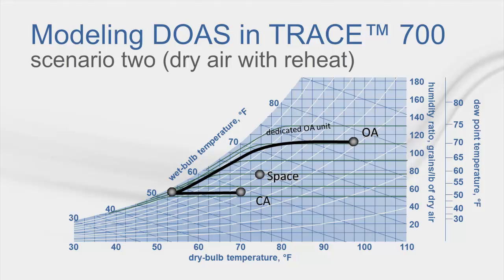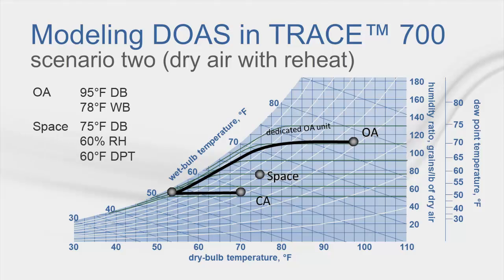Examining the psych chart on that hot and humid summer day at 95°F dry bulb, 78°F wet bulb outside, the DOA dehumidifies the outdoor air and then reheats it to approximately space-neutral temperature. The resulting dew point of the conditioned air is drier than the space, which means the DOA is removing part or all of the space latent load.